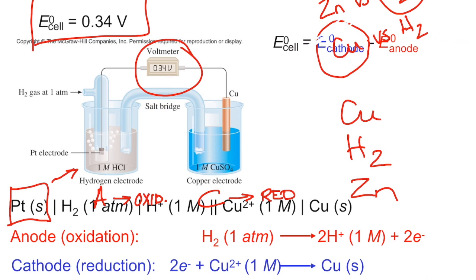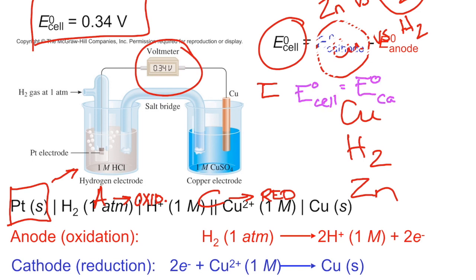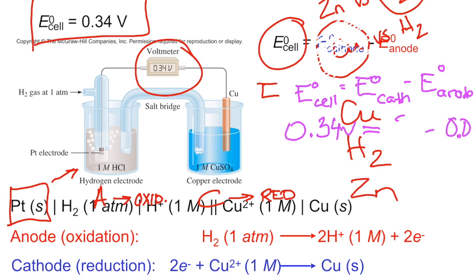Here's the cell diagram for hydrogen-copper. You'll notice platinum is listed — it's not part of the reaction itself, it just provides a solid surface for the exchange of electrons to occur. There's the half reaction at the anode where hydrogen is losing electrons, and copper at the cathode being reduced or gaining the electrons. Overall, there's our net ionic equation, and the cell potential equals cathode minus anode.